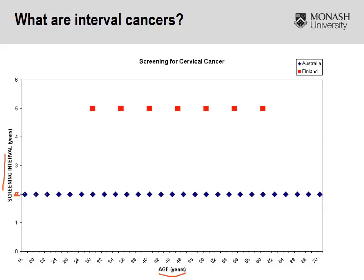Looking at the Finnish population, they screen much later and over a longer screening interval. This is where the balancing act comes into play — do we screen every two years as per Australia and risk over-diagnosis, or every five years and risk cancers developing during that larger five-year interval?